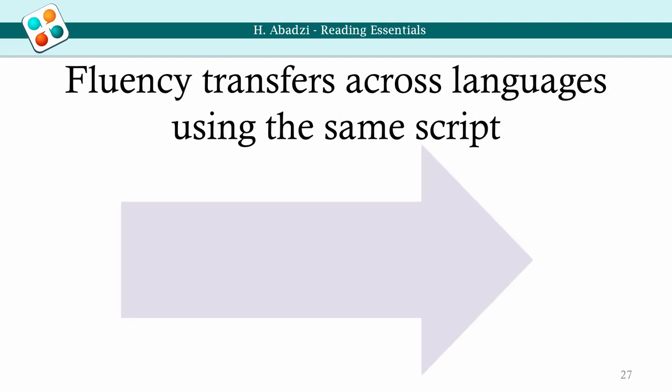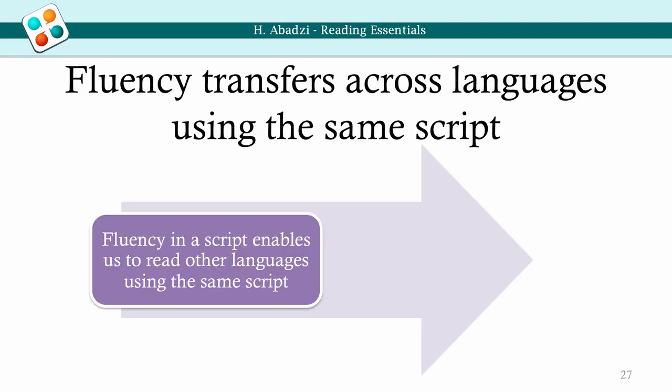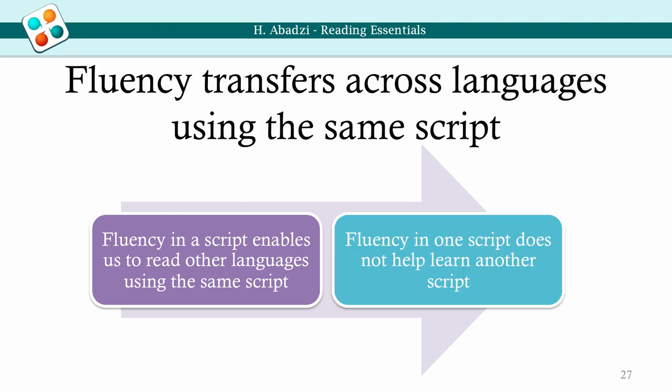If we are automatic readers in the Roman script, we can read anything in it — from Turkish to Bahasa. All we need to know is the pronunciation rules. To actually learn the language is a different process, but if we already know the script, we will not struggle with the letter shapes. This concept is the basis for teaching children of minority languages to read in their own language first. However, this only happens within the same script. Automaticity in the Roman script does not usually help learn another, such as Arabic or Armenian — only phonological awareness and general reading strategy transfer.